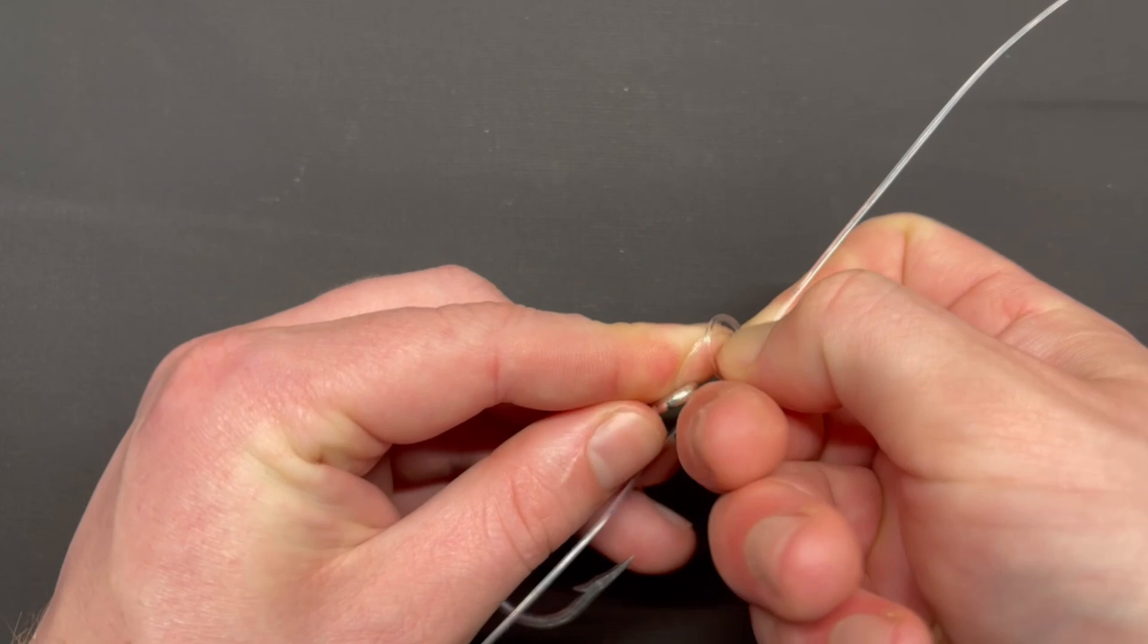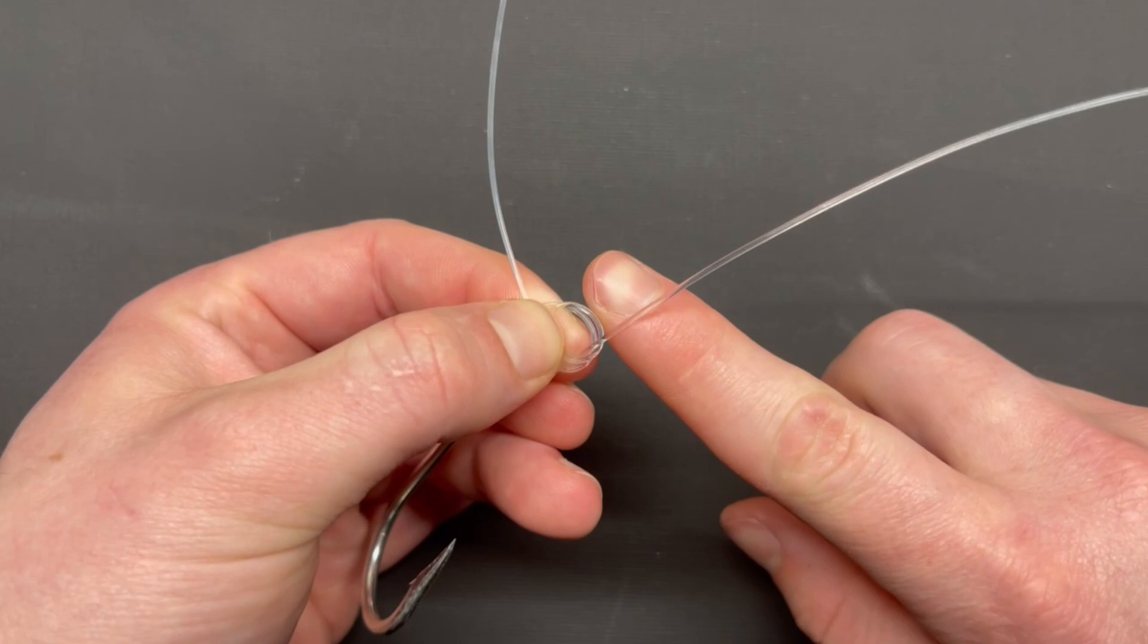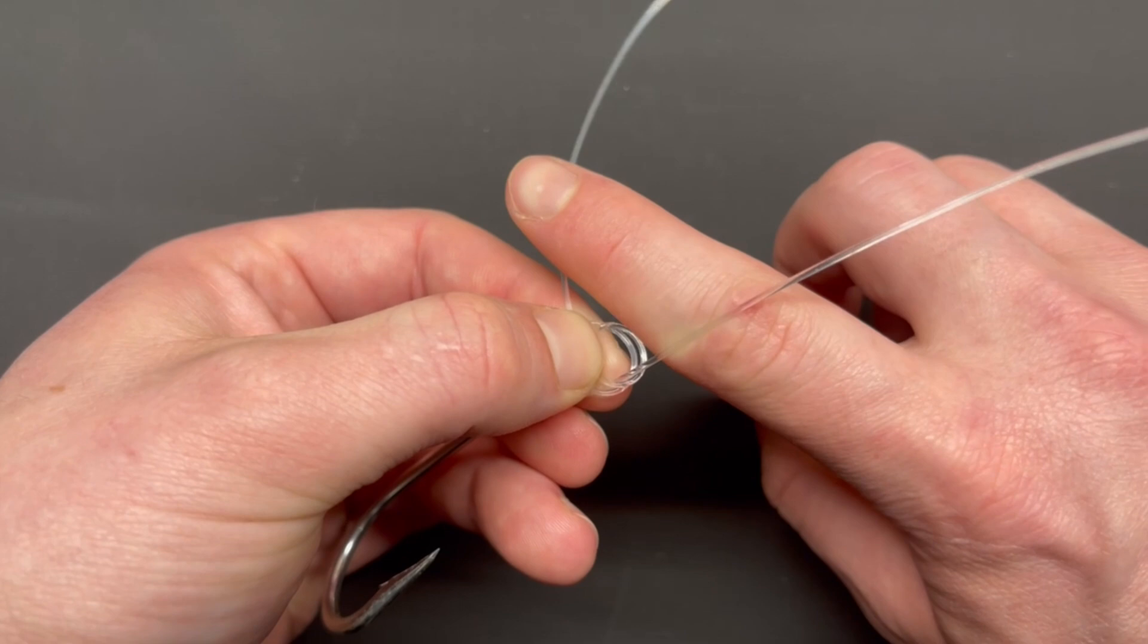About the same size, a little smaller than a dime. Take your finger, not in front, but behind the main line again, wrap it around and you've made three loops.